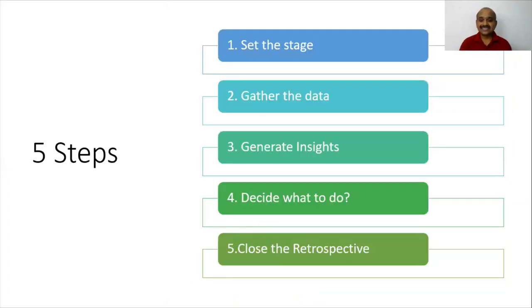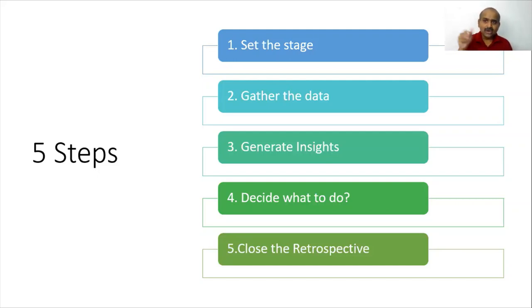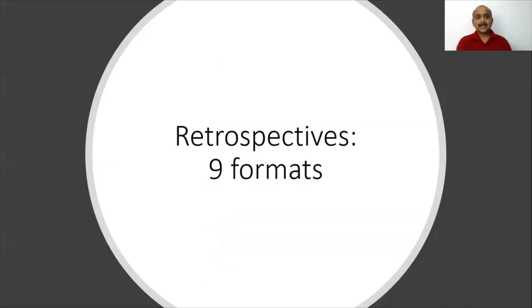Friends, now that we understand how the retrospective process works, let us understand the different formats. The five steps are: set the stage; gather the data; generate insights by asking why and making the team think about the bigger picture; decide what to do by prioritizing action items; and close the retrospective by thanking the team, summarizing action items, and taking feedback on the process.